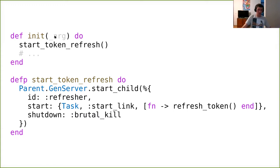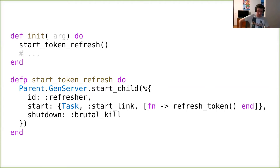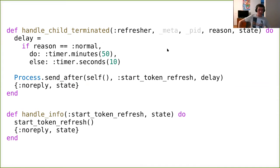Similar to query manager and query runner, the refresh runner goes to the external API and fetches the access token. In the manager's initialization, I invoke start_token_refresh, which is a wrapper around start_child. One notable detail: I explicitly set brutal_kill as the shutdown strategy, meaning we won't give the child a chance to clean up when stopping — we send the kill signal immediately. The reason: if the manager is down, I don't need the refresh process to finish anyway, since the manager is the one keeping track of the access token.